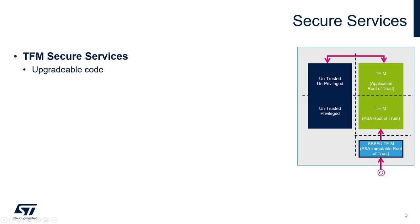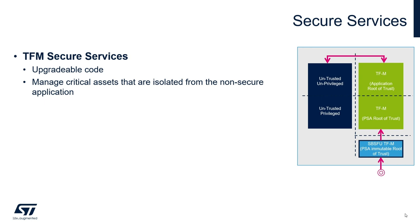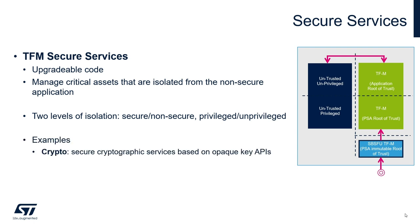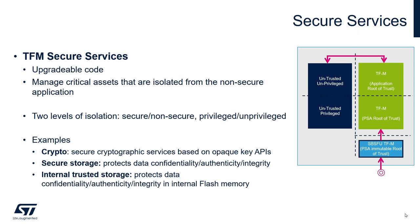In addition to the secure boot and secure firmware update, the TFM package provides secure services at runtime — a set of upgradable services managing critical assets that are isolated from non-secure code. With this approach, non-secure applications don't have direct access to critical assets. The secure service will export specific APIs to allow the non-secure code to perform operations with the critical assets without ever exposing them. For example, non-secure code could use a secure service to encrypt or decrypt confidential information using a sensitive key, without ever having direct access to the key itself. Secure services are provided with two levels of isolation, enabled by the privileged and unprivileged mode usage. The TFM specification defines secure services such as cryptographic services allowing crypto operations with obfuscated keys, secure storage and internal trusted storage to protect data confidentiality, authenticity, and integrity in the device, and attestation to prove a device identity.